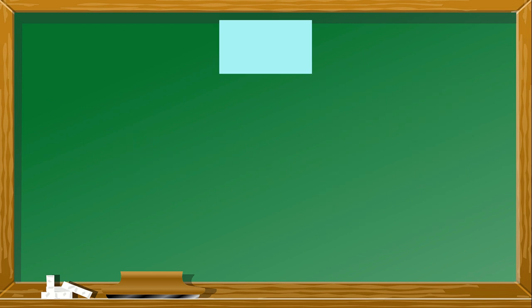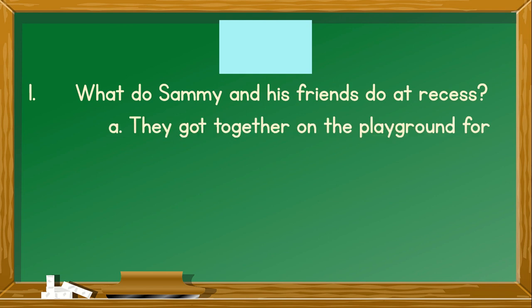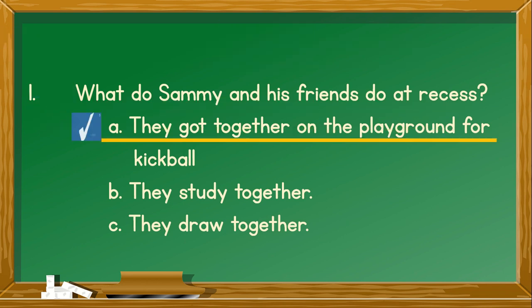Good job. This time, let's answer the questions from the story. Number 1. What do Sami and his friends do at recess? A. They got together on the playground for kickball. B. They studied together. C. They draw together. They got together on the playground for kickball.